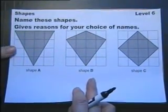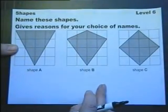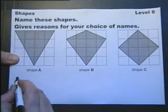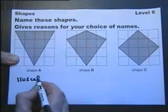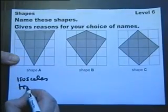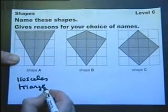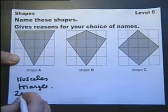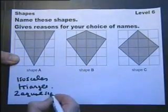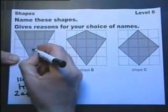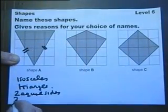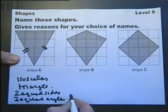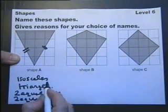Name these shapes. Give reasons for your choice of names. Well this is a triangle, it's an isosceles triangle. Why? Because it's got two equal sides and it's got two equal angles. So I've got to say what the shape is and why.